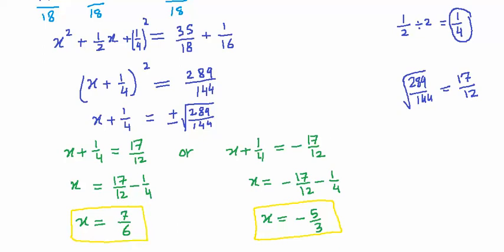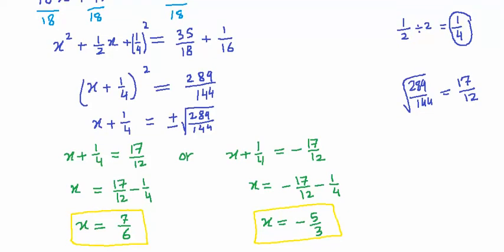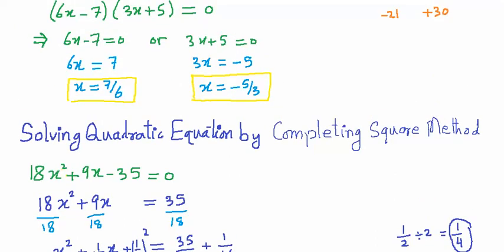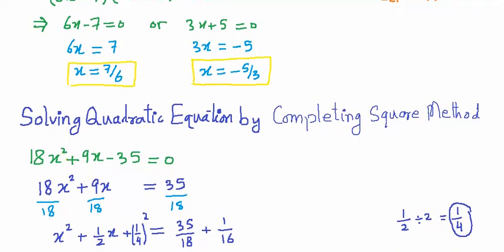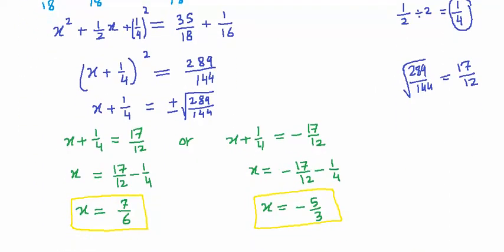We always prefer factorization first, then the quadratic formula, and completing the square is our last option. Notice that both methods give the same roots: 7/6 and -5/3. I hope it is clear.